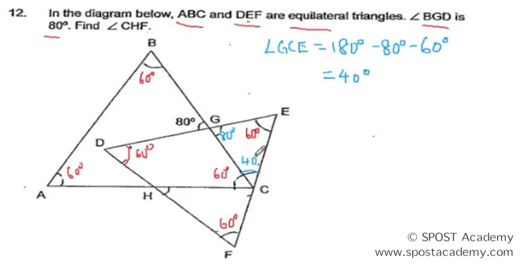So I know this is 40 degrees. From here, angles on the straight line, I will be able to find angle HCF. So HCF is actually 180 degrees minus 60 degrees minus another 40 degrees, and that will give us 80 degrees because of the straight line here.